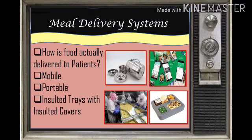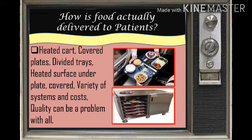Meal delivery system: this tells us how the food we ordered will be delivered — via mobile, portable, or insulated trays with insulated covers. How is food actually delivered to patients? Food can be delivered in trays, and there are several ways to deliver food to patients, like heated carts, cover plates, and divided trays.